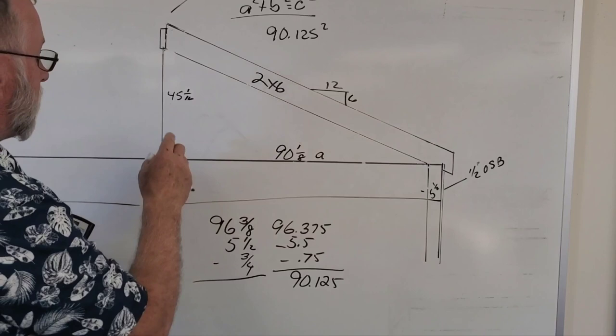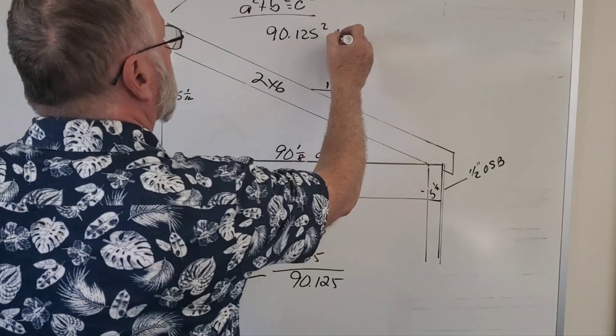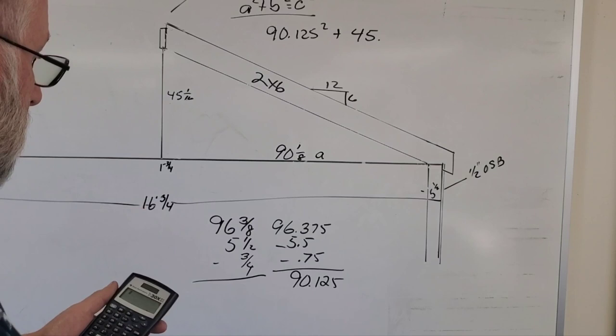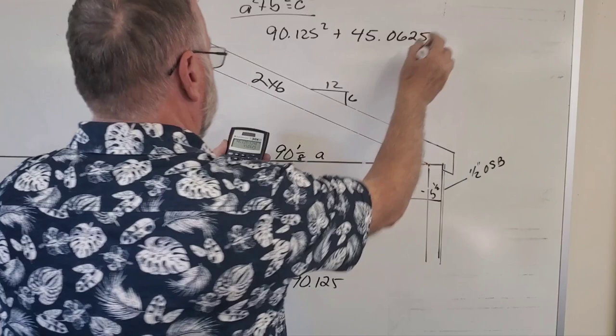So let's get rid of the 45 and multiply by 16. That's one sixteenth. So now I know that my ridge board from the top of my wall to the bottom of my ridge board is 45 and a sixteenth. So 90.125 divided by 12 times 6 equals 45.0625.